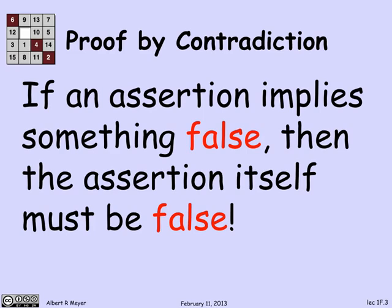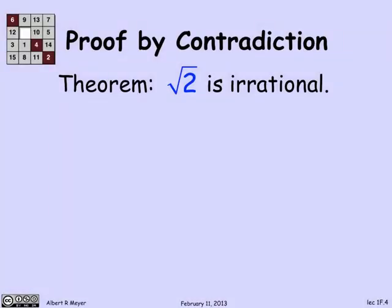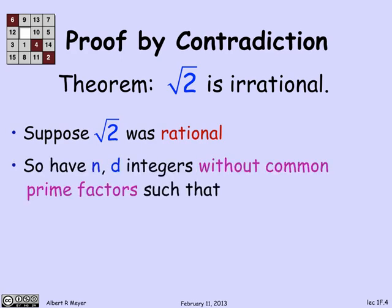OK, let's look at a real example of this, an amazing fact that was known thousands of years ago to the ancient Greeks, which is that the square root of 2 is irrational. Now let's remember that a rational number is a fraction. A rational number is a quotient of integers. And the way we're going to prove that the square root of 2 is not a quotient of integers is by assuming that it was. So let's assume that the square root of 2 was a rational number, which means that we've got integers n and d without common prime factors such that the square root of 2 is equal to n over d.